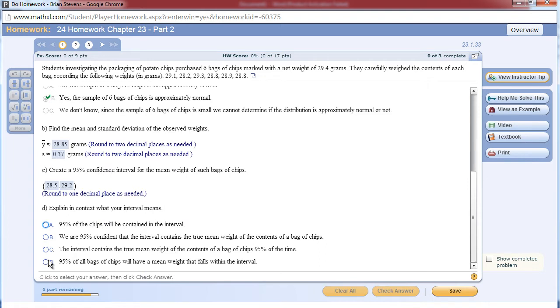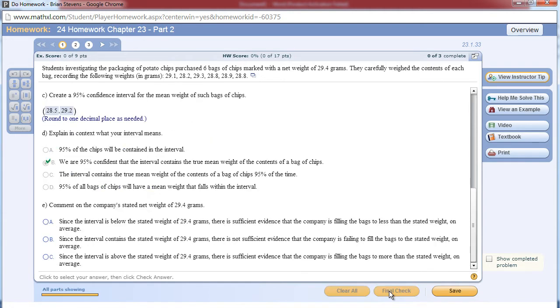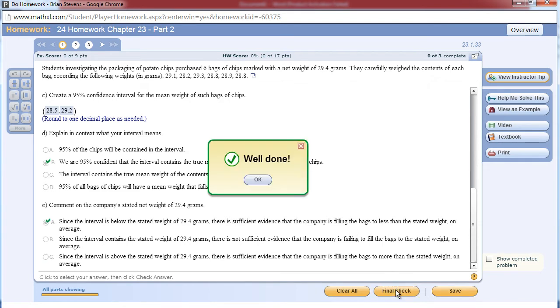Explain in context what your interval means. It's always starting out with we are, and I always say I am, and so I am 95% confident the interval contains the true mean weight of the contents of a bag of chips. Comment on the company's standard net weight of 29.4. Well, 29.4 is not in the interval. Since the interval is below it, there is sufficient evidence that the company is filling the bags to less than the standard weight on average.